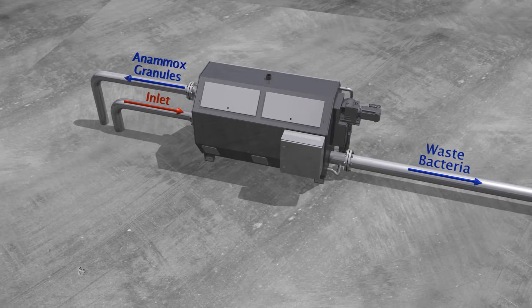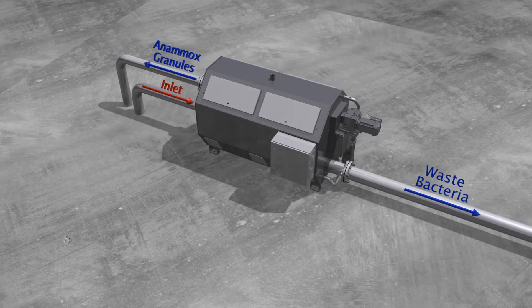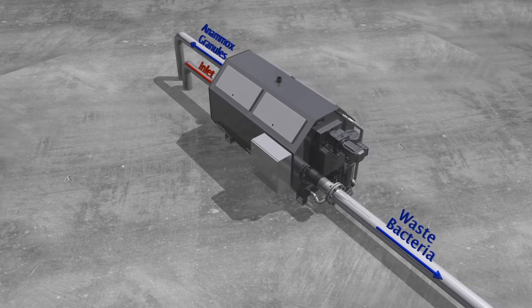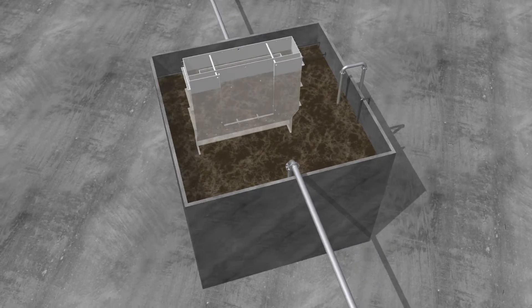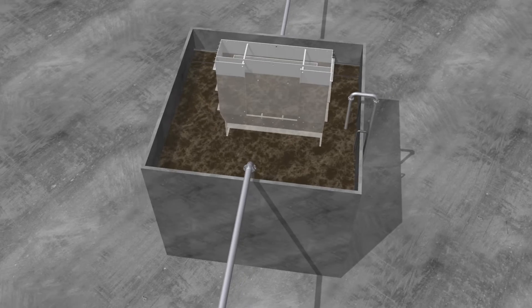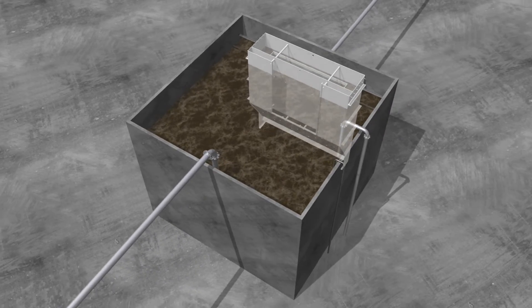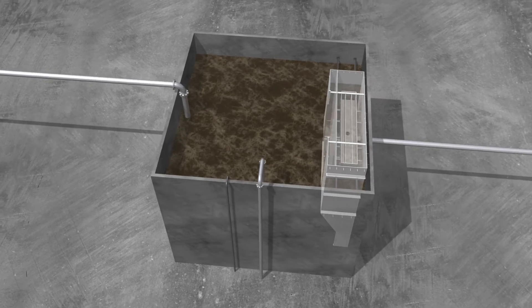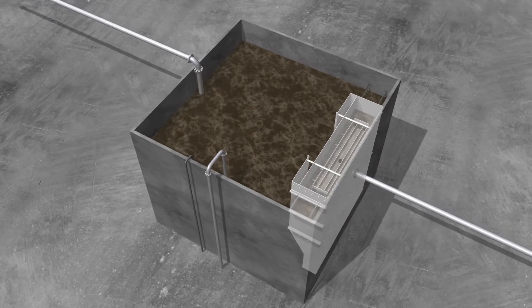granules will go back into the reactor while the waste bacteria will be sent to solids processing. In addition to the micro screen is an internal settling zone which allows the heavier sludge to settle and be reintroduced back into the reactor via gravity, and the cleaner effluent to leave the reactor and be sent back to the front of the plant.